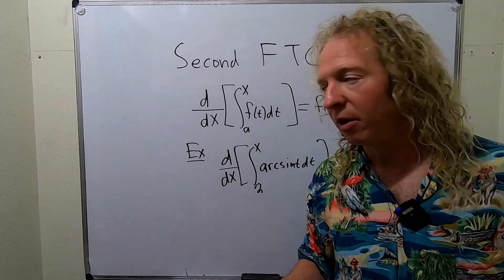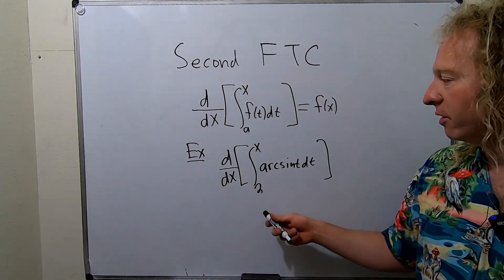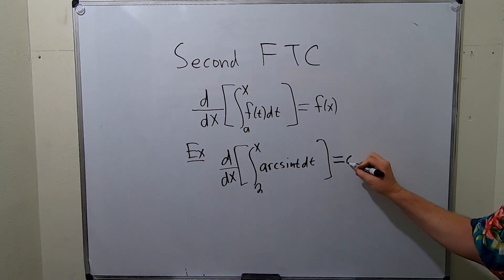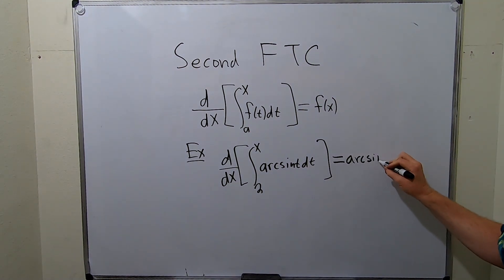So according to the formula, all you have to do when you take this derivative is just take the x and you put it where the t is. So it's arc sine of x. That's it.